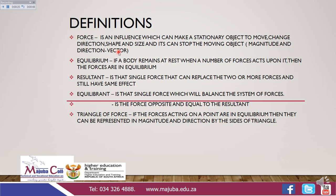Force is a vector because it has a magnitude and a direction. Equilibrium: if a body remains at rest when a number of forces act upon it, then those forces are in equilibrium. The resultant force is that single force that can replace two or more forces and still have the same effect. The equilibrant is a single force which will balance the system of forces, and it is also a force that is opposite and equal to the resultant force.